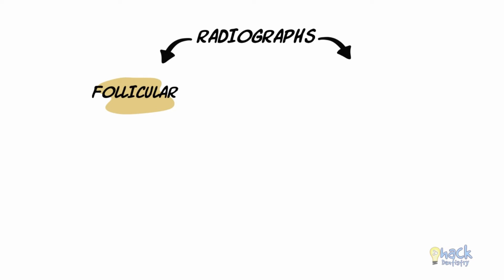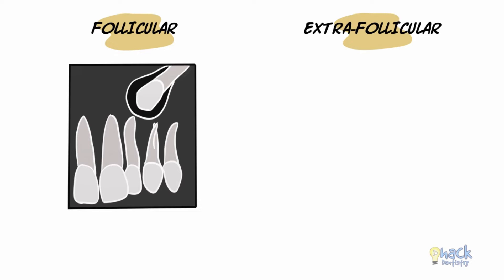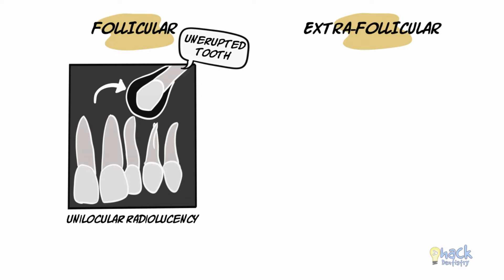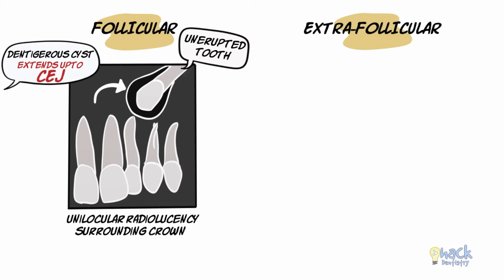Radiographically, AOTs are of two types: the follicular and the extrafollicular type. The follicular type mimics the dentigerous cyst and manifests as a unilocular radiolucency associated with the crown. However, unlike the dentigerous cyst, the radiolucency often extends beyond the cementoenamel junction and also involves the root of the tooth.